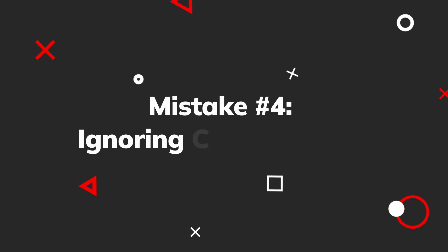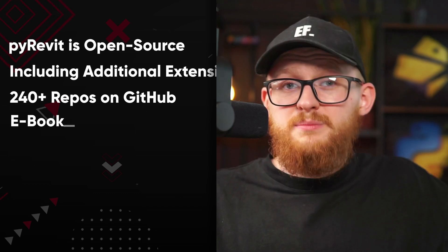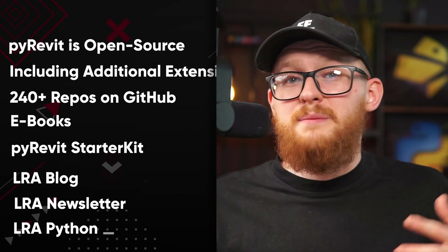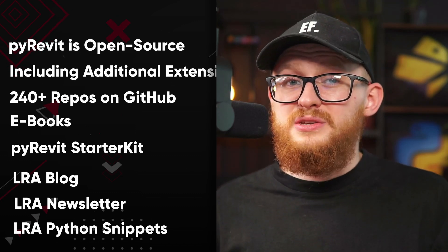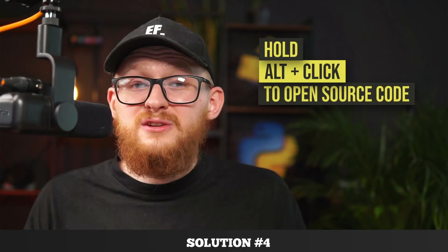Mistake number four is ignoring code samples. PyRevit is open source, and so are all additional extensions, including 200 repositories on GitHub. I also provide snippets in my eBooks, PyRevit Starter Kit, on my website, blog, newsletter, and Python snippet sections. You can find a lot of code to learn from and reuse in your own tools. You can hold Alt and click on any PyRevit tool — including extensions like EF Tools — to look inside, learn something, or steal useful snippets.